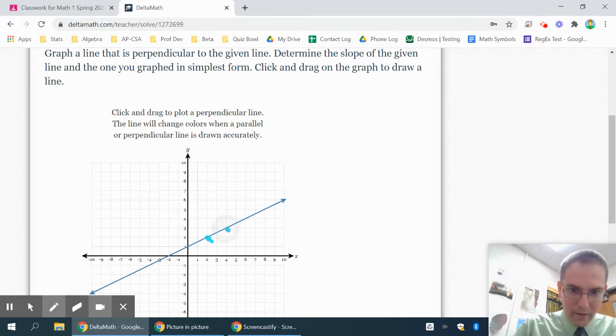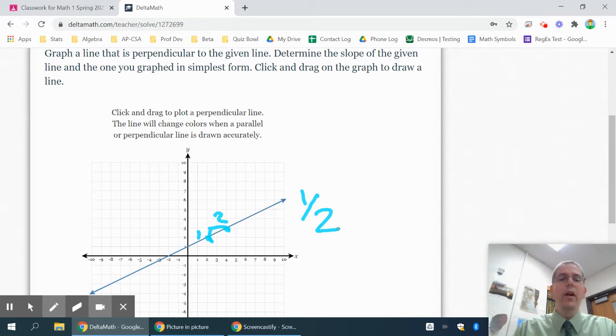In this case it looks like I've gone up one and over about two, so up one and over two, so the slope of this line is one half. Slope is change in y over change in x, or rise over run, so up one over two is a slope of one half.